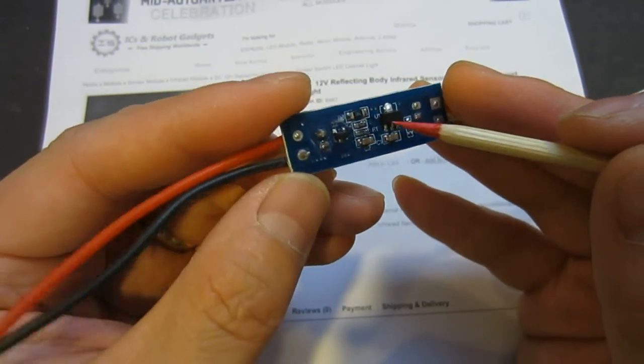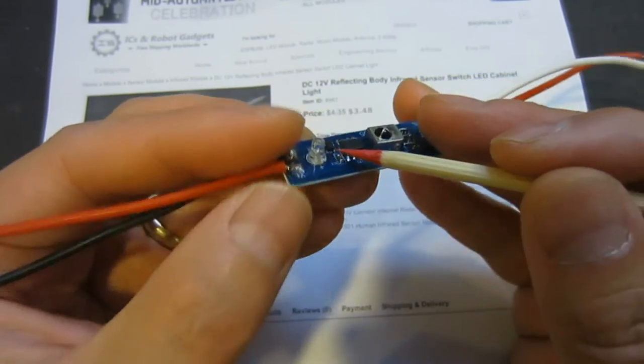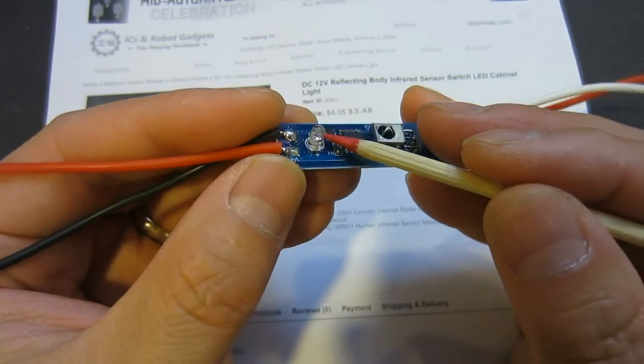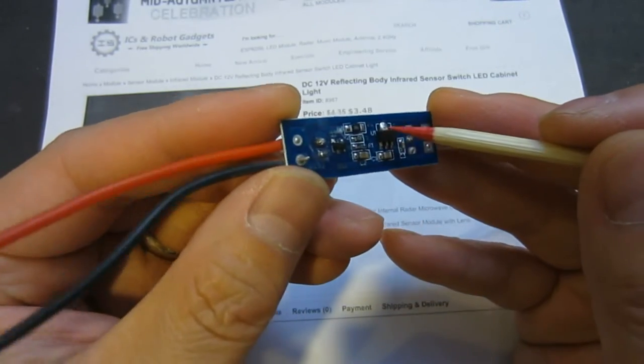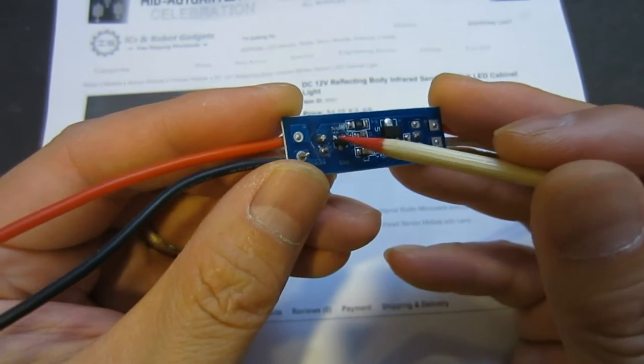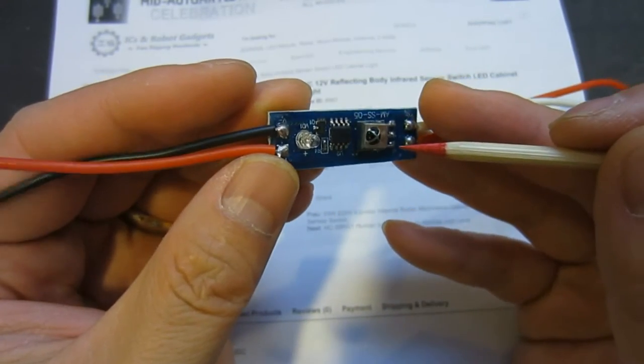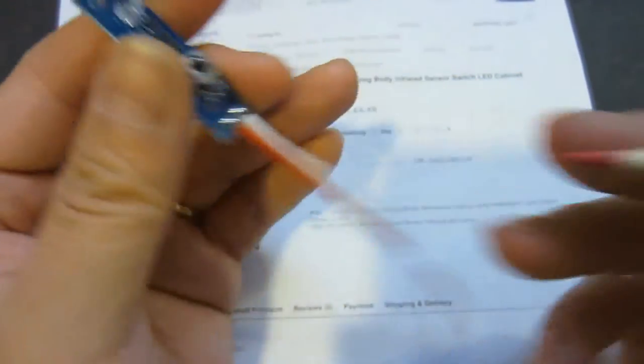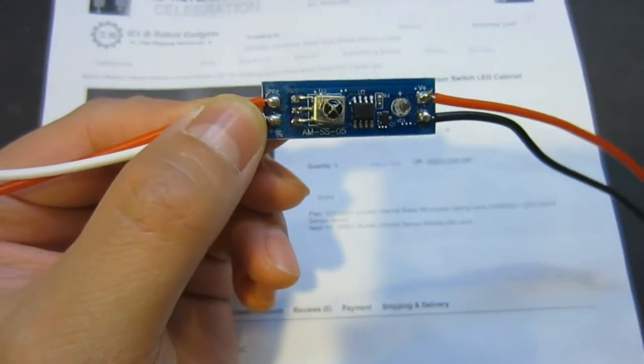And as you can see here, we have a transistor. This transistor is used to power this IR transmitter and to switch it on and off. So that's pretty much all there is to this module.